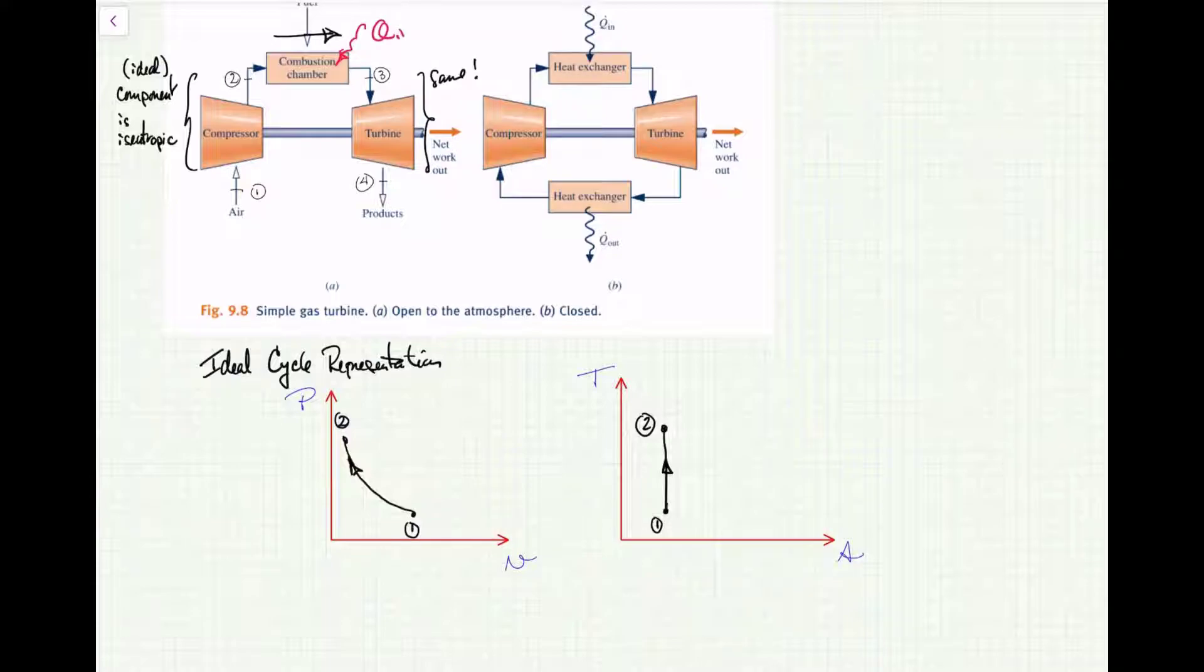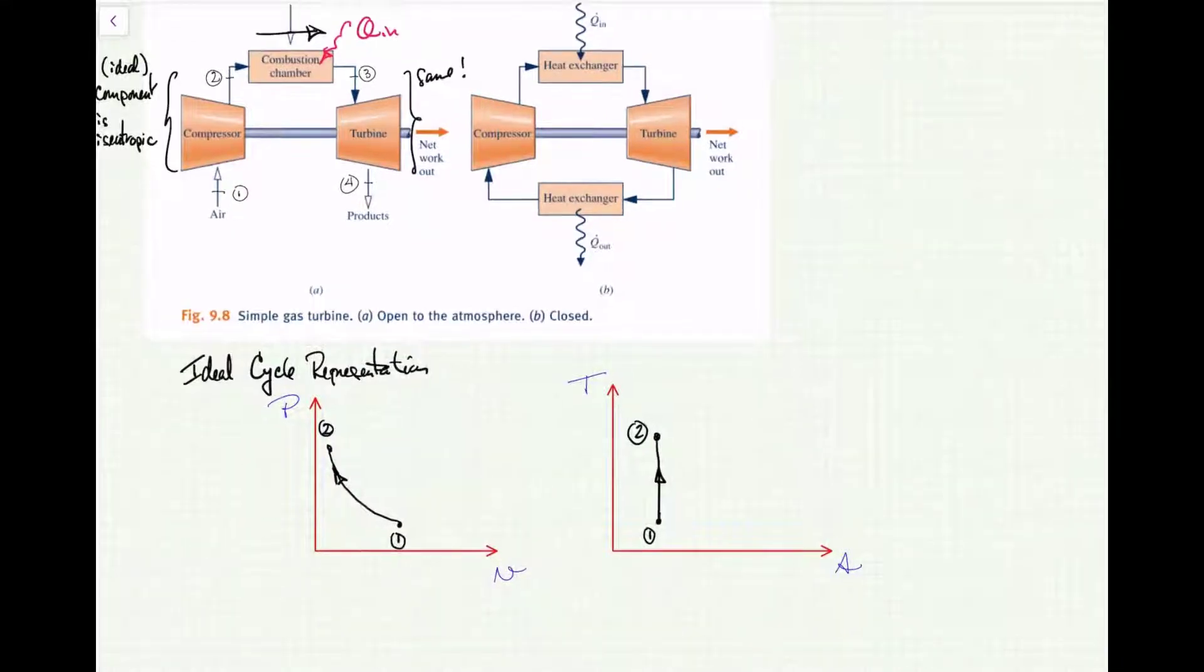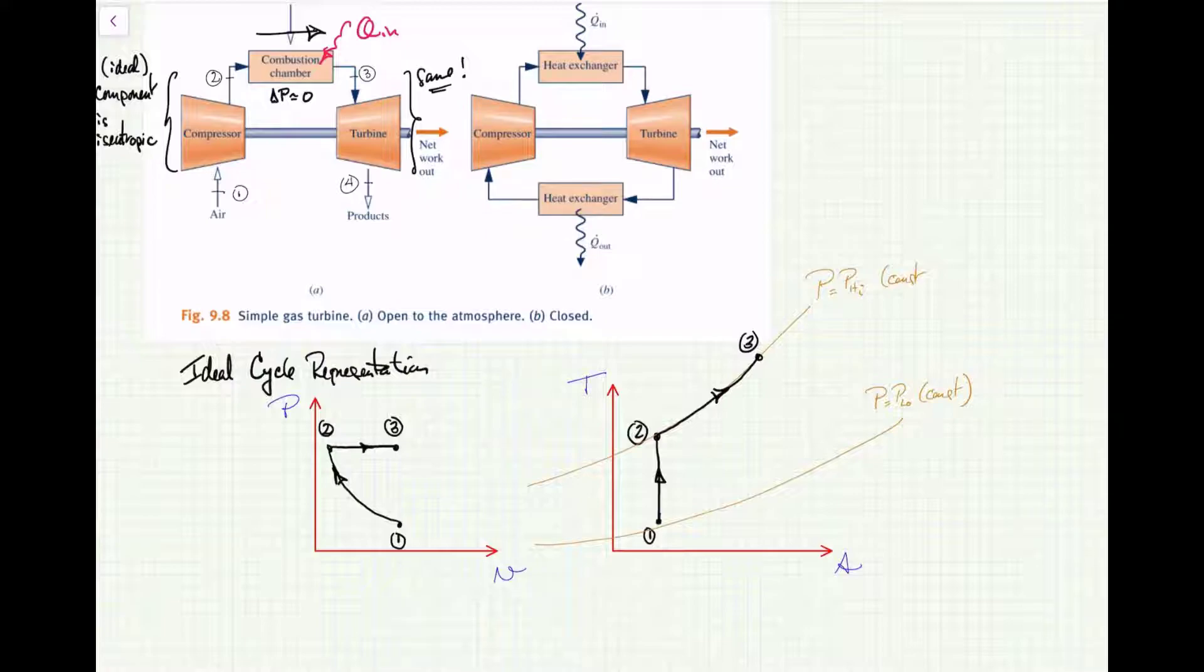Next we're adding heat through the combustion chamber, Q_in, and that's going to move us at constant pressure from point 2 to point 3. The gas turbine cycle in the ideal representation has a lossless, pressure-lossless combustion chamber where the flow gets heat added to it without decreasing pressure—so a horizontal line, like a diesel cycle. On a T-S diagram, this follows the isobar, which are these divergent curves for an ideal gas, from 2 to 3.